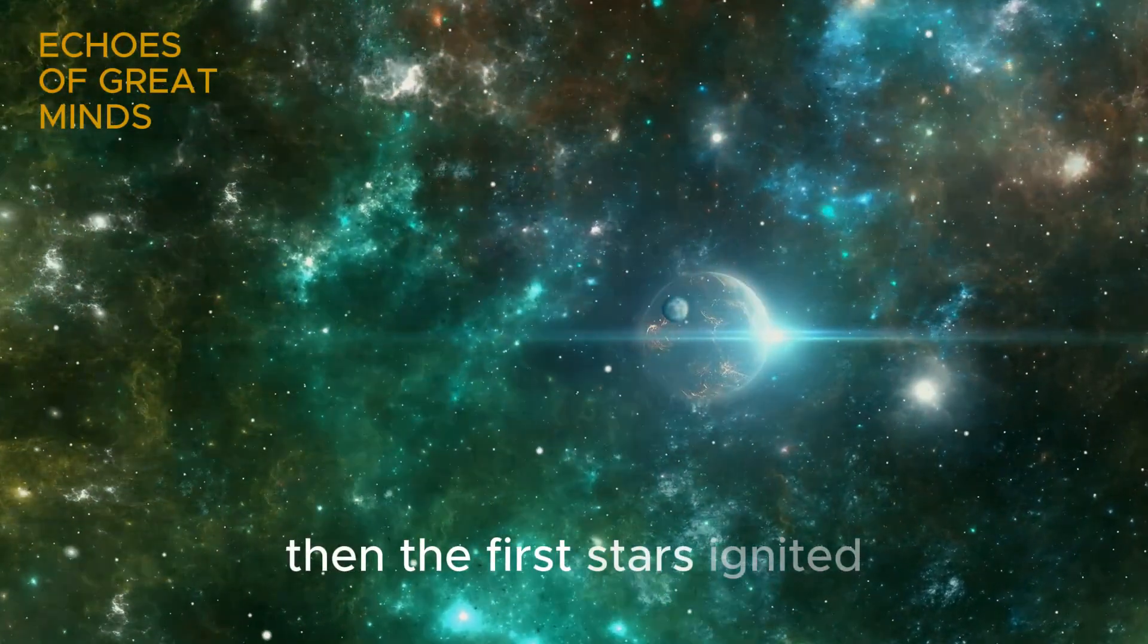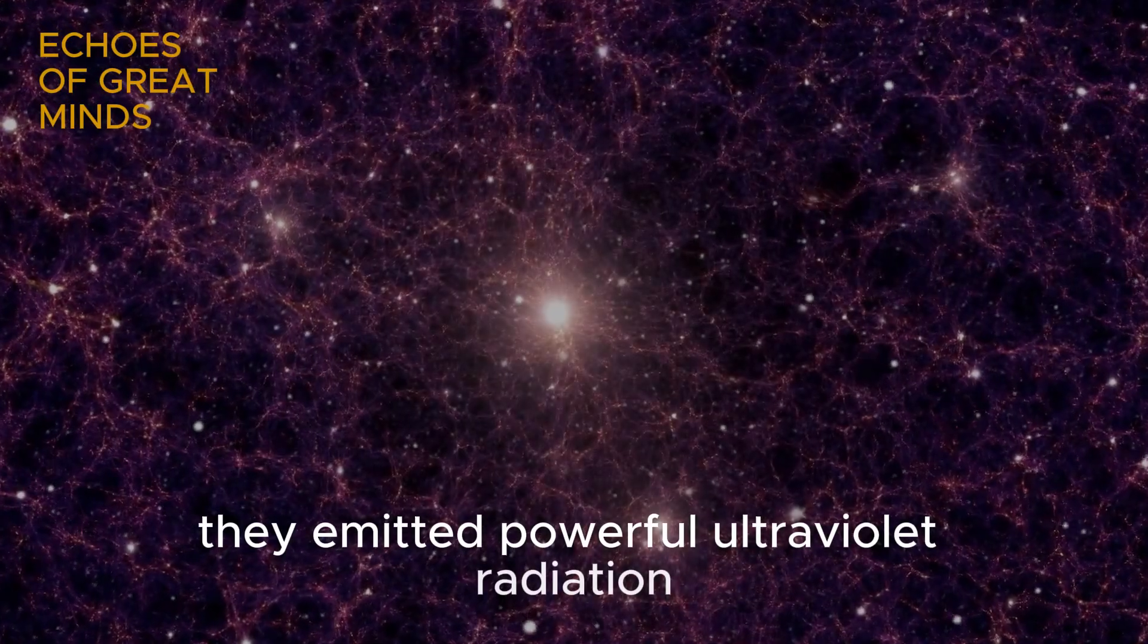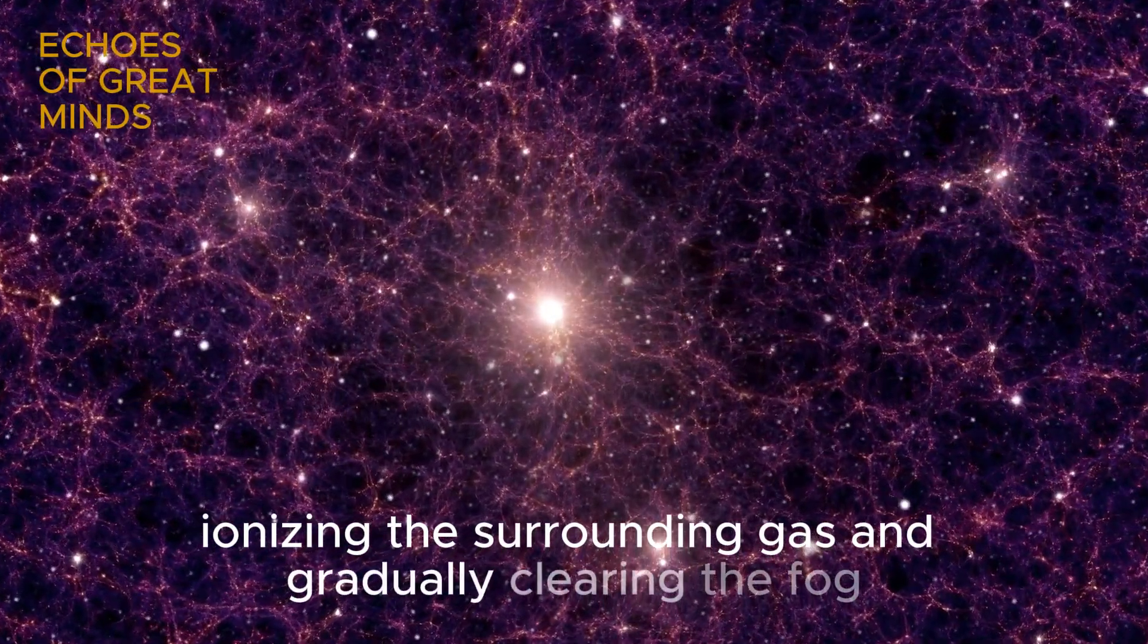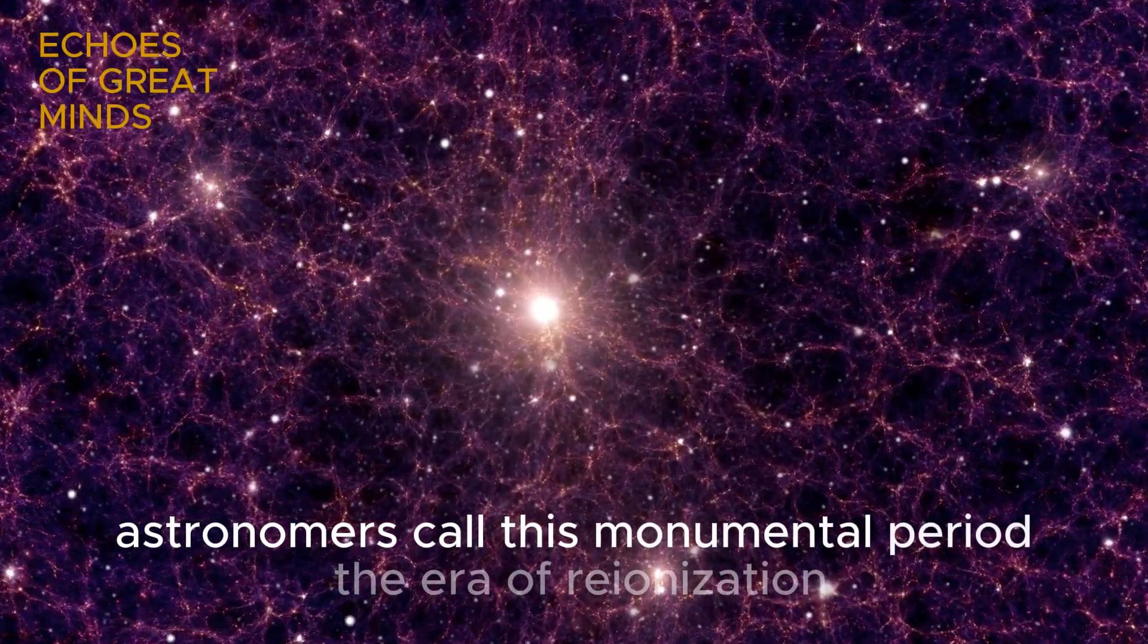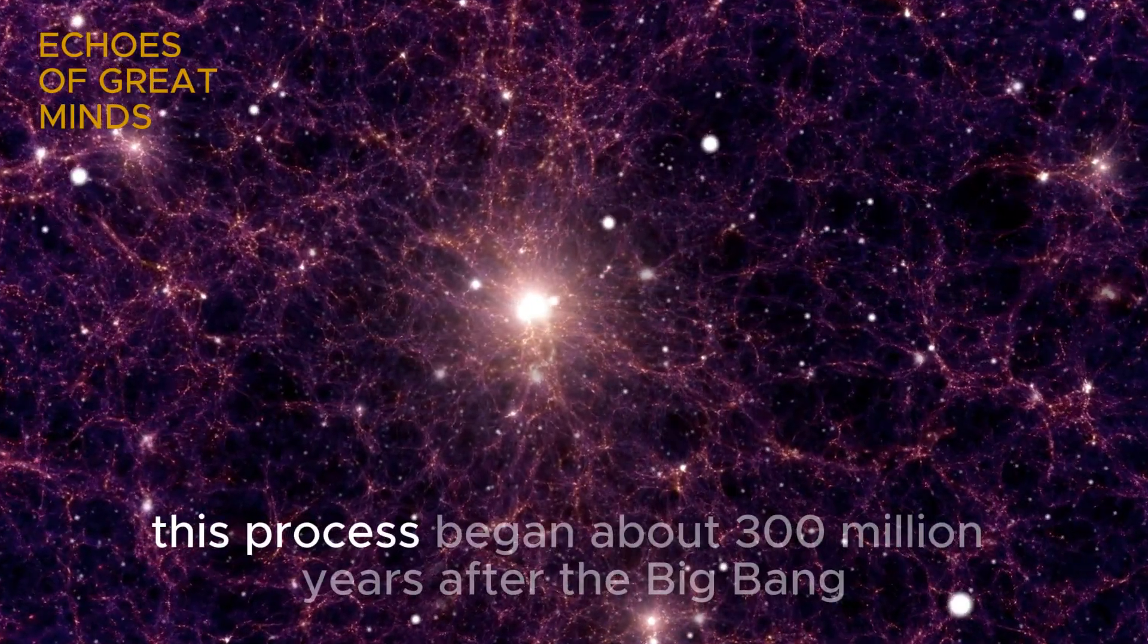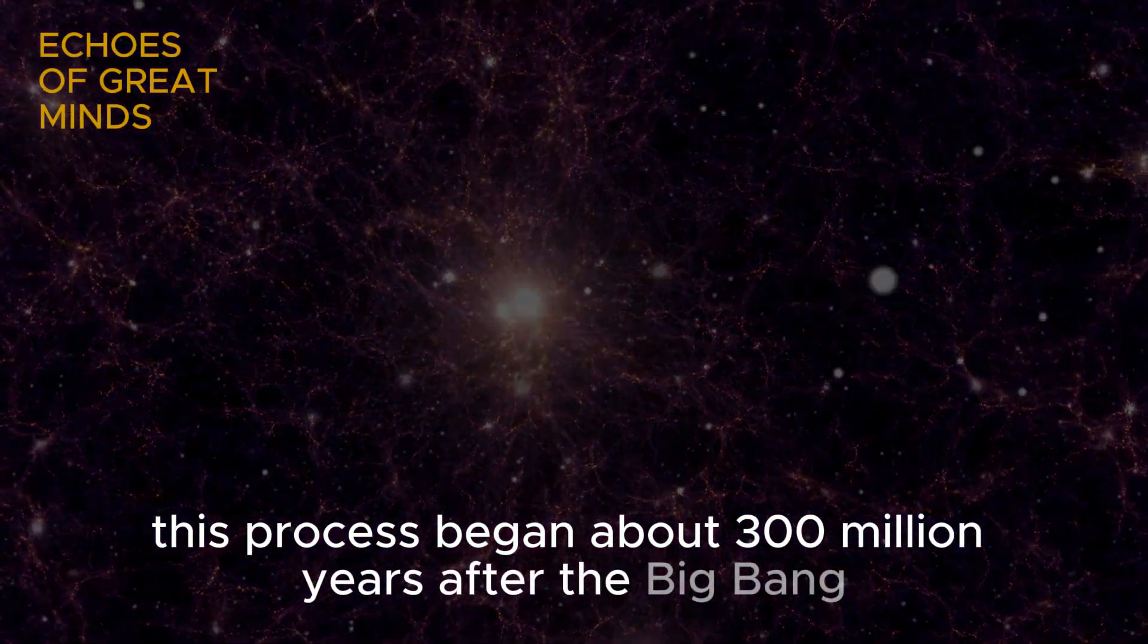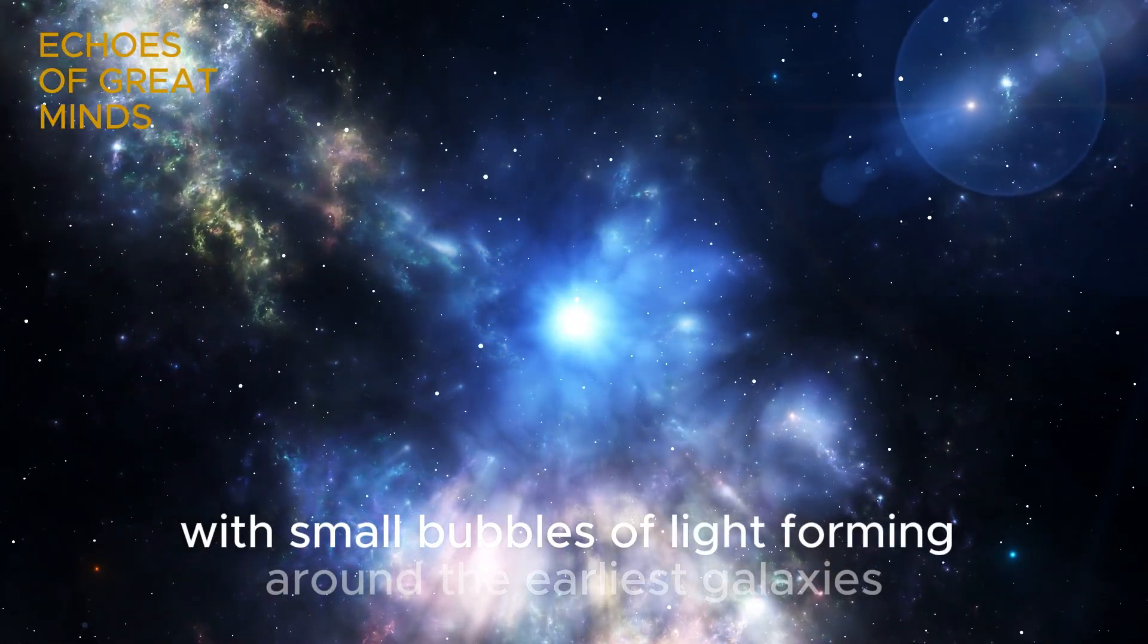Then, the first stars ignited. They emitted powerful ultraviolet radiation, ionizing the surrounding gas and gradually clearing the fog. Astronomers call this monumental period the era of Reionization. According to long-standing models, this process began about 300 million years after the Big Bang and progressed slowly, with small bubbles of light forming around the earliest galaxies.